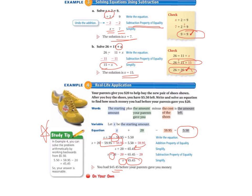Let's take a look at the study tip. It says in example four, we can solve the problem arithmetically by working backwards from $5.50. So we could have done $5.50 plus 59.50 minus 20 equals 45.45. So our answer is reasonable.